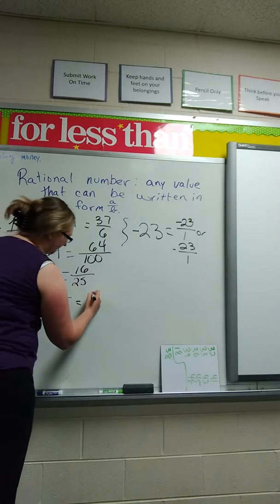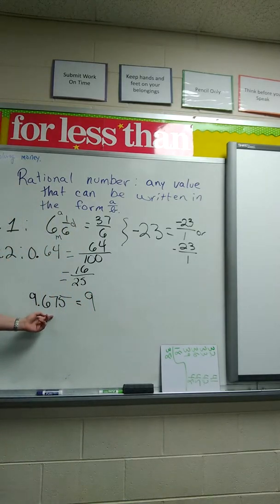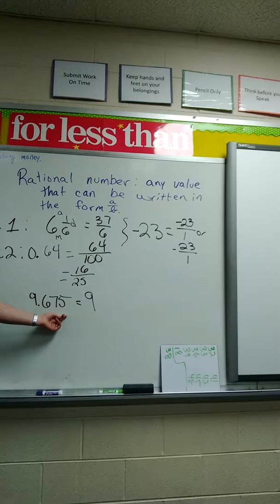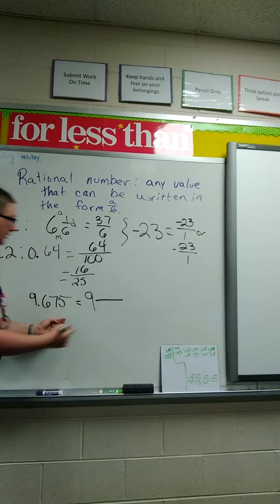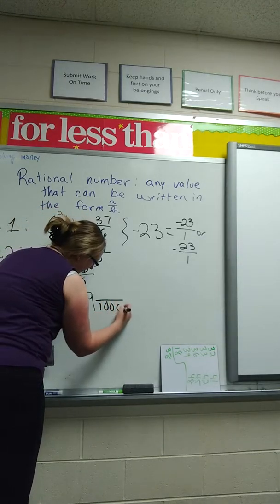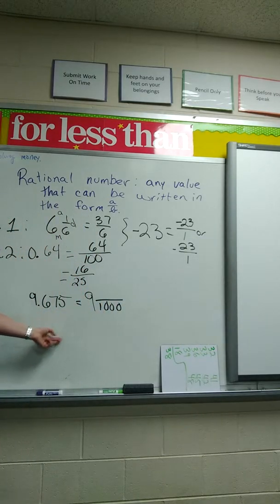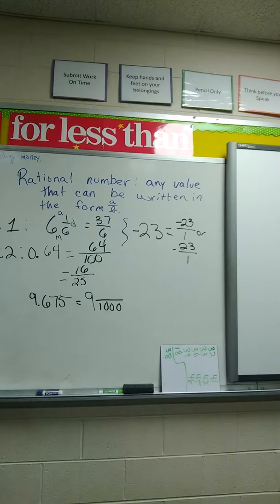So we have 9. How many decimal places do I have? Okay, what goes in my denominator? A thousand. A 1 and 1, 2, 3 zeros. What goes in my numerator? 675.